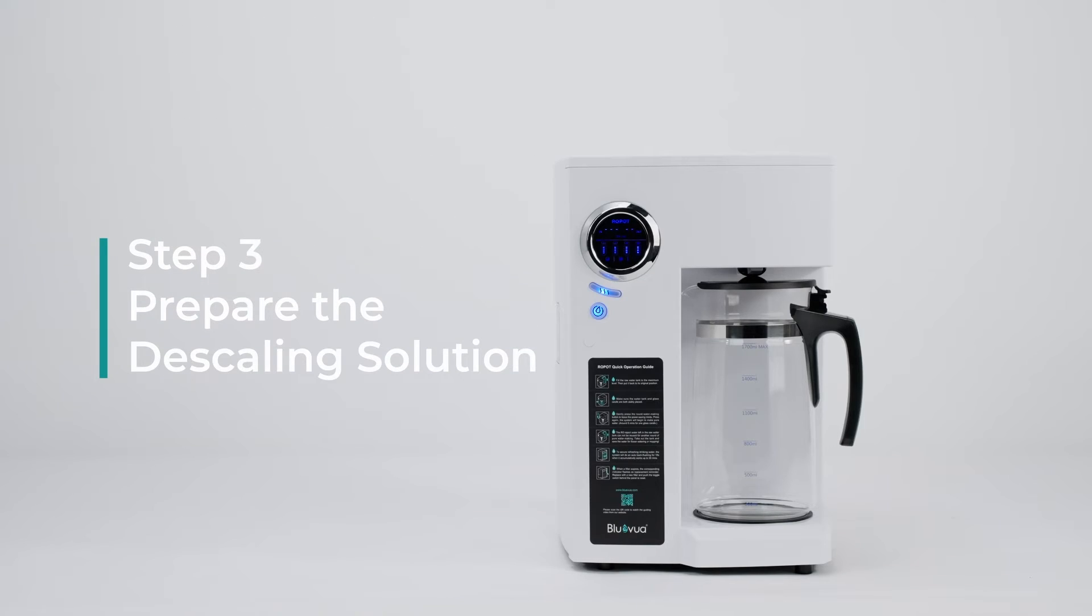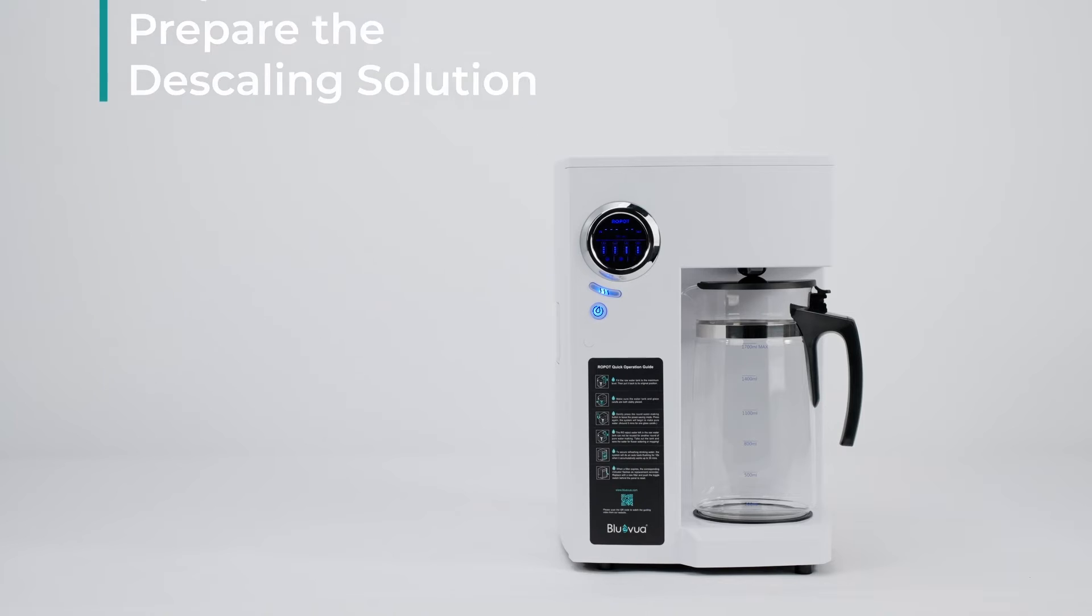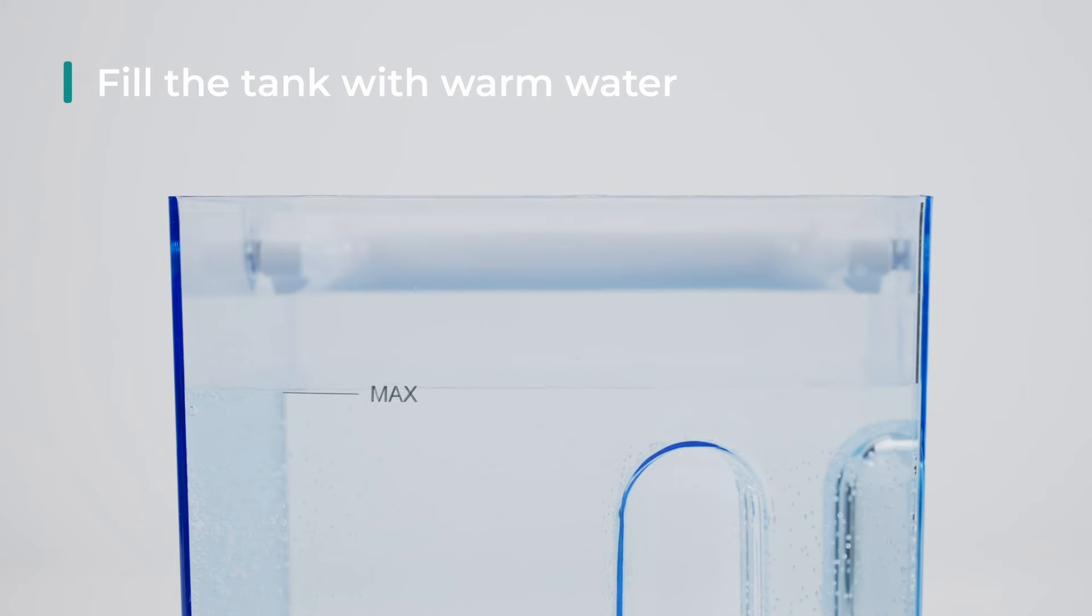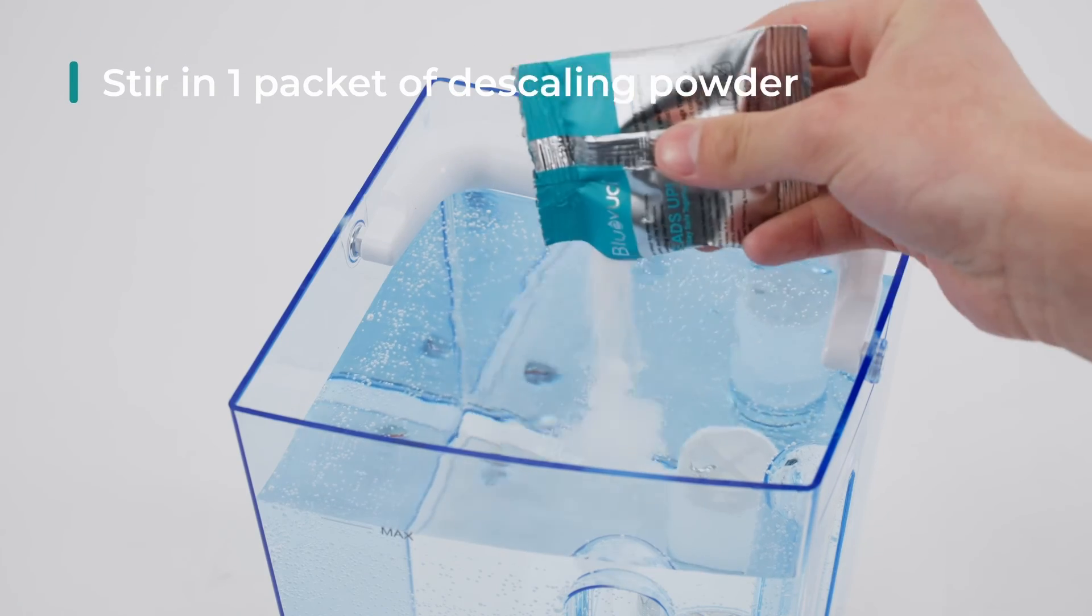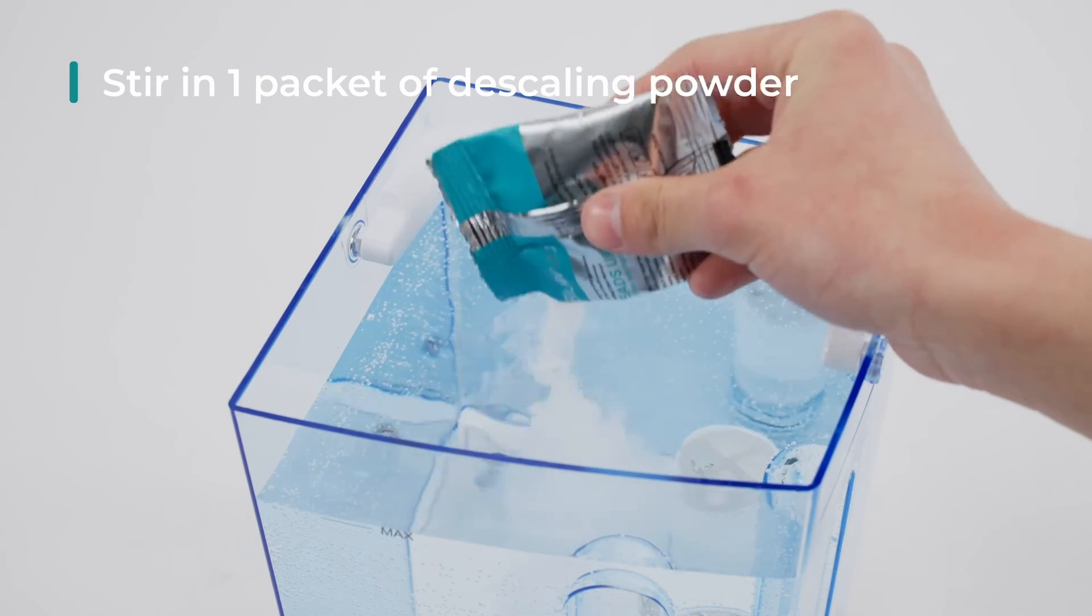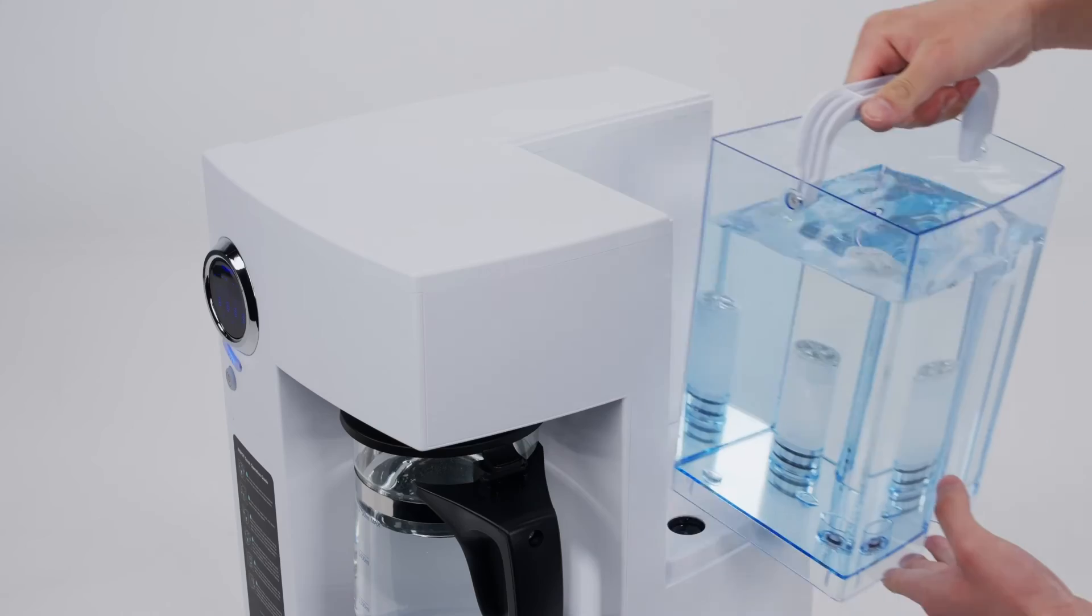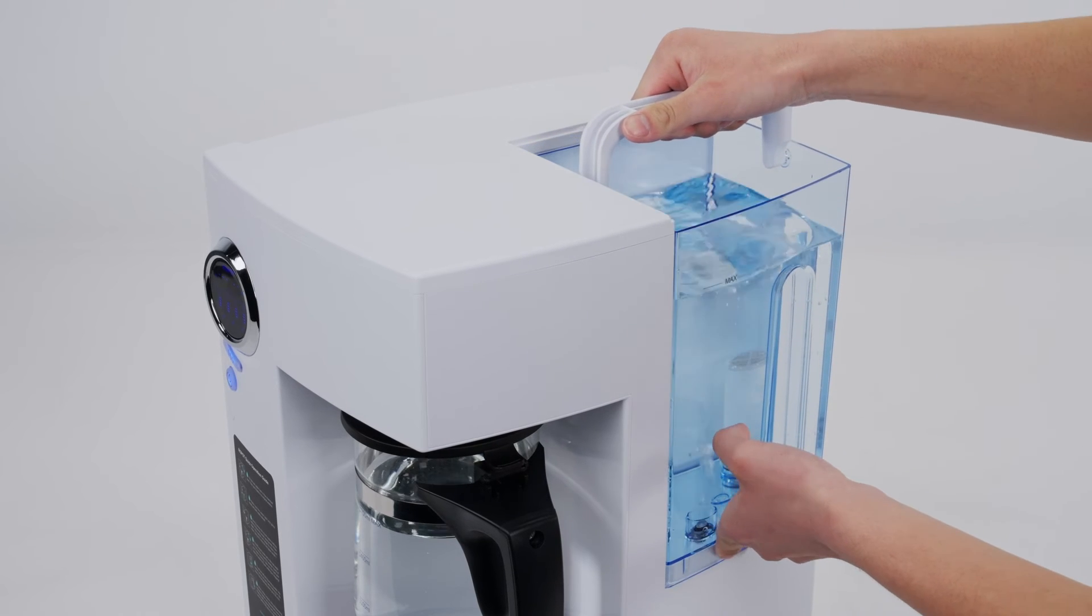Step three: Prepare the descaling solution. Fill the tank with warm water up to 120 Fahrenheit to the max line. Stir in one packet of descaling powder until fully dissolved. Place the filled tank back onto the tank base.